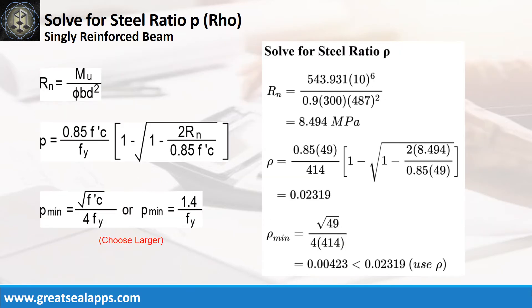Given maximum moment equals 543.931 kN-m, resistance factor equals 0.9, B equals 300 mm, and D equals 487 mm, the beam design ratio RN equals 8.494 MPa, and reinforcement ratio rho equals 0.02319.